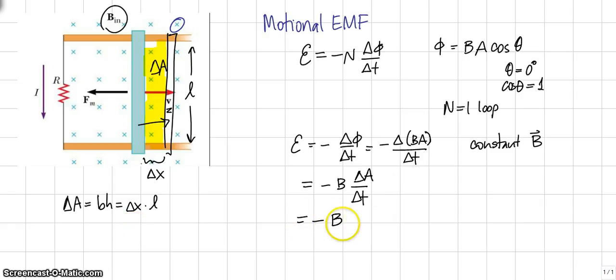So let's substitute that into our expression. Minus B times delta area delta X times L divided by delta T. Now, what I want you to consider is this expression right here. What is delta X over delta T?